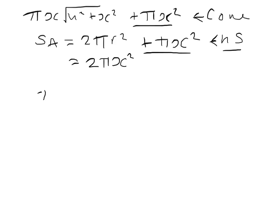So if we take the cone, we've got pi x times the square root of h squared plus x squared equals 2 times pi x squared. We can cancel the pi's.